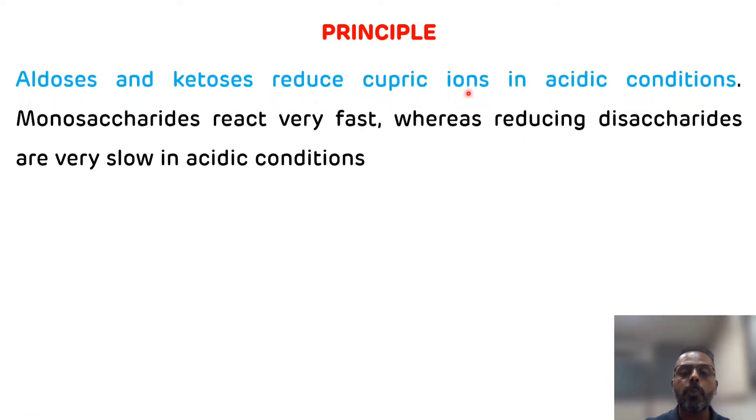First, the principle of Barford's test. Aldoses and ketoses both reduce cupric ions in acidic conditions. Monosaccharides react very fast, whereas reducing disaccharides are very slow in acidic conditions. For this reason, Barford's test is used to differentiate monosaccharides from disaccharides. That is the principle of Barford's test.